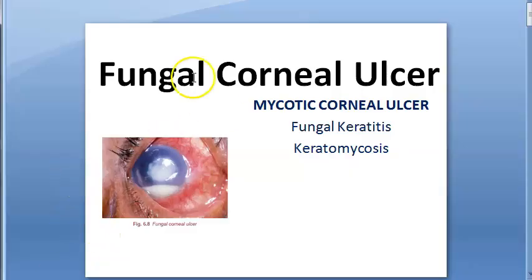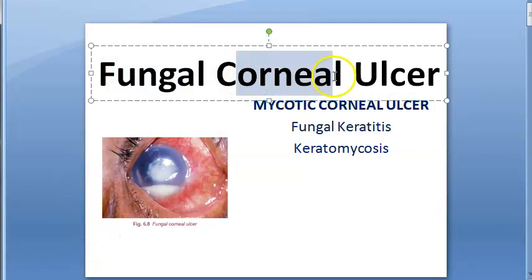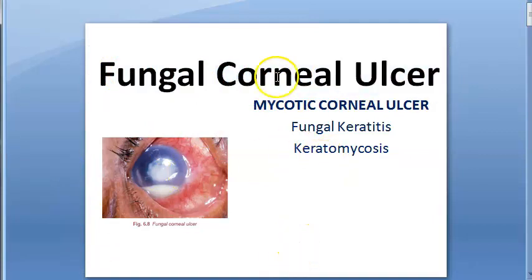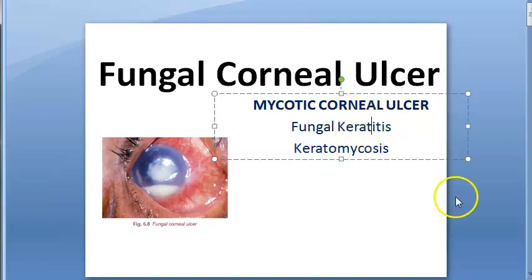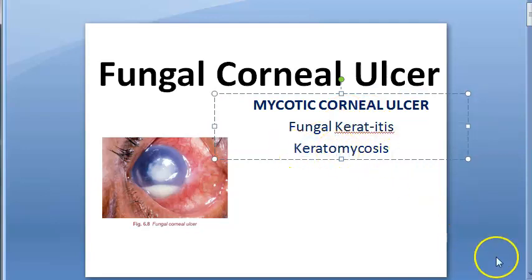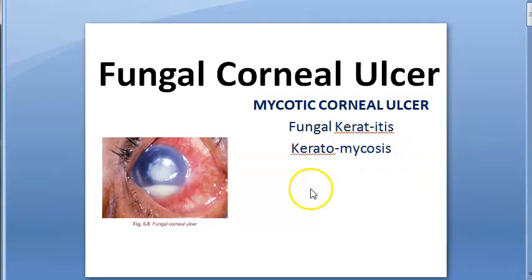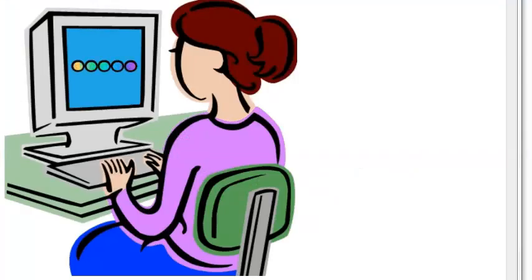Hello, welcome. In this video, we want to look at fungal corneal ulcer — an ulcer of the cornea caused by fungus. It can also be called mycotic corneal ulcer. In exams, they may also ask about it as fungal keratitis or keratomycosis, which refers to corneal disease involving fungus. So be aware of all these names.